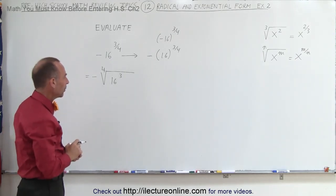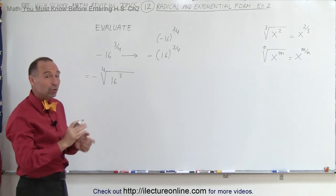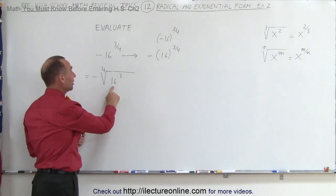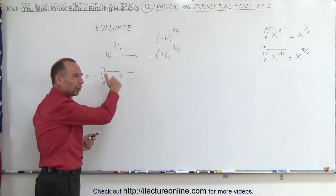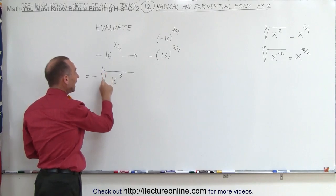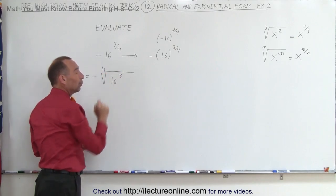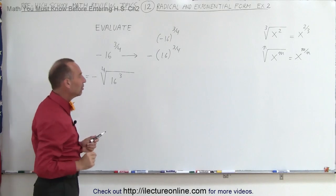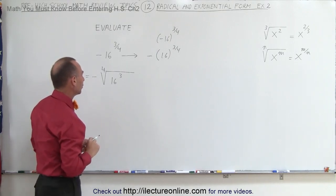Now it's easier to evaluate it. Now it doesn't matter in which order we do it. We can first take 16 raised to the third power, but then we end up with a really big number. Or we can take the number 16, take the fourth root of it, and then take that result and raise it to the third power. And that's an easier way to go because then we're working with smaller numbers.